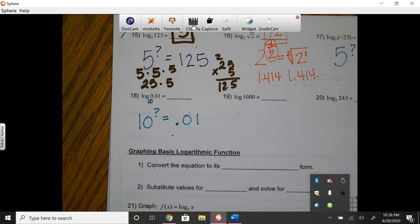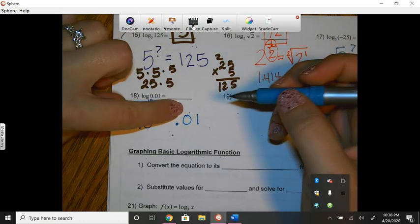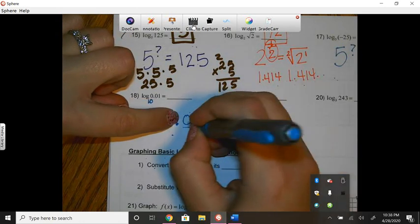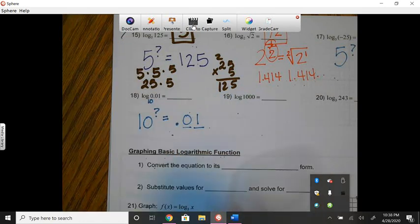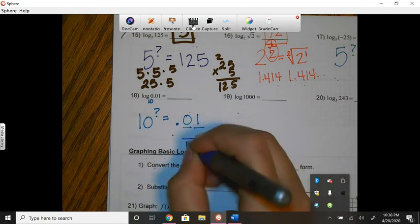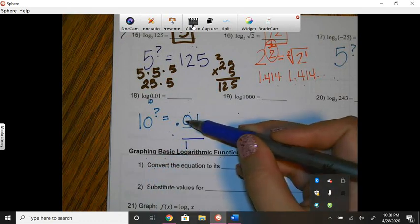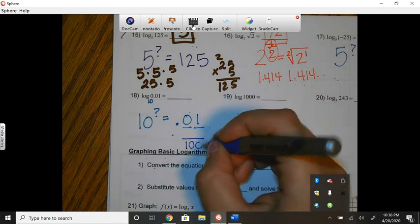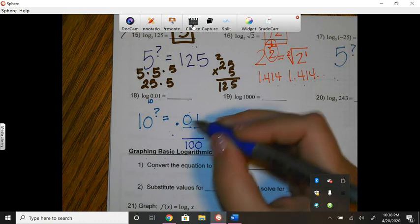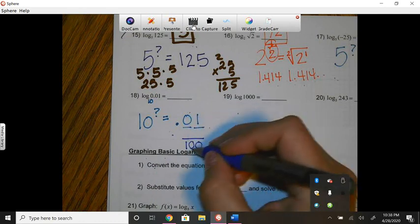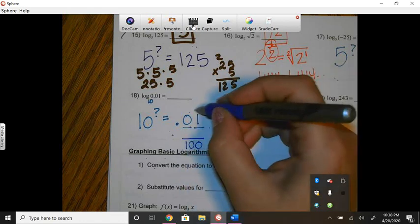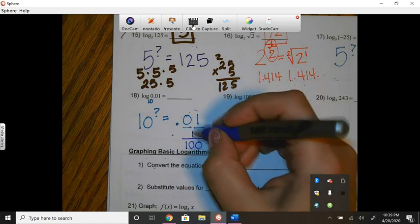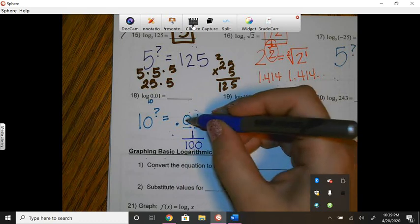So to review how to do that, there are two numbers after the decimal. So that means to write it as a fraction, since there's two numbers after the decimal, I need two zeros. So however many numbers after the decimal, that's how many zeros I need to put with the 1. And then this number, so 0, 1, so just 1, would go on the top. So 0, 1 is just 1.